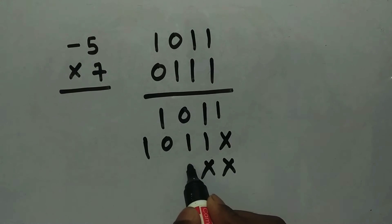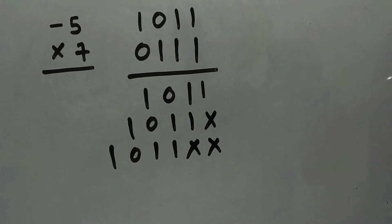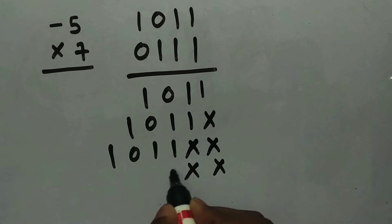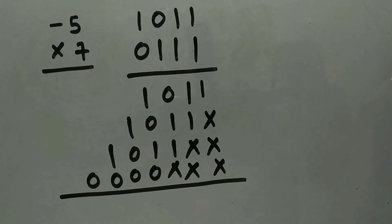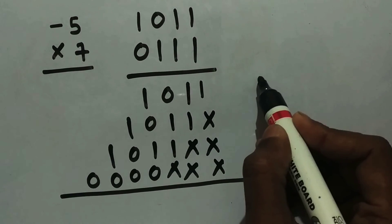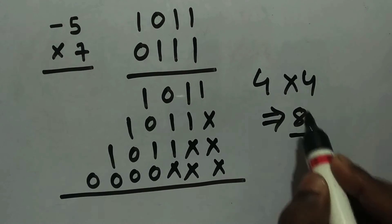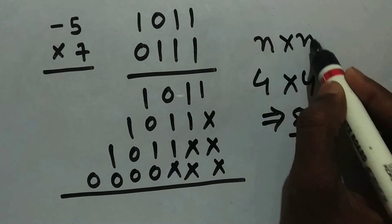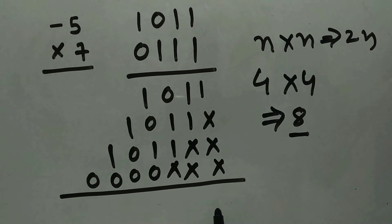Continuing step by step: the next bit is 1, so we have two shift markers and write 1011 shifted two places. Then we multiply with the 0, so with three shift markers we get all zeros. Our partial products are done. Remember: when multiplying an n-bit number by an n-bit number, the result will be 2n bits. Here we're multiplying 4-bit by 4-bit, so the result is 8 bits.